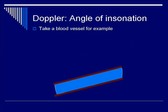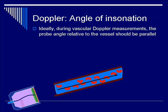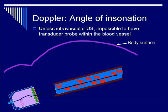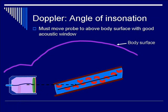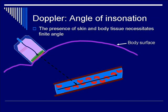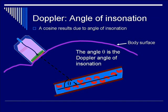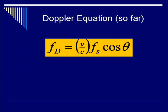The next component to incorporate is the angle of insonation. Ideally, if a transducer faces directly into the vessel at zero degrees, that is ideal — a parallel probe angle. However, in real life you have body surface to contend with. When placing an ultrasound probe on the abdomen to look at abdominal arteries, an angle forms between the line of sight of the probe and the direction of the vessel, called theta — the Doppler angle of insonation — the cosine of which must be incorporated into the Doppler equation.